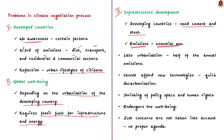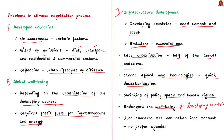Overall, the author says that developing countries are in the phase of late urbanization and account for more than half of annual emissions. But in such a phase, they cannot afford many new technologies that help in quick decarbonization. This will result in shrinking of policy space and human rights of developing countries, and endangers their effort to achieve comparable levels of well-being with developed countries. The author says the just concerns of developing countries are not taken into account in climate negotiations because there is no proper agenda for the meetings.